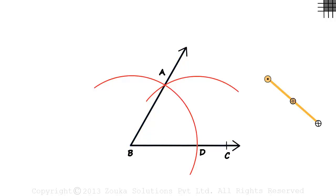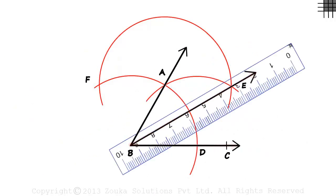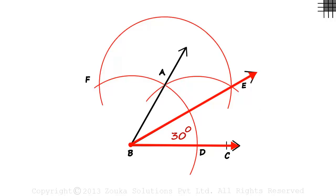Now getting the 30 and 120 degree angles is quite simple. We keep the compass at point A and draw a big arc like this which intersects the previous two arcs at points E and F. If we join points B and E to get angle EBC, it will measure 30 degrees. Angle ABC measures 60 degrees and angle EBC measures 30 degrees.